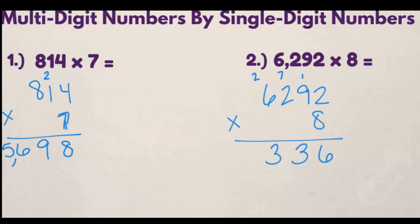8 times 6 is 48, plus 2 is 50. So that was our last of numbers up here. So we can go ahead and put the 50 down below. And our answer is 50,336.